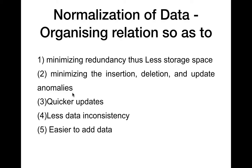We have already seen what those anomalies are using examples in our first video in the fourth module. The schema should make it easy to add and update data. These are the aims and guidelines when we design a schema. But we have not yet discussed how we can achieve that — what is the standard mechanism or set of rules to build a good schema. Such rules come under normalization.